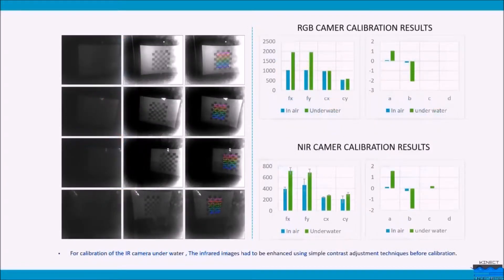The Kinect IR and RGB cameras were calibrated using a checkerboard submerged underwater. The infrared images required were of very low intensity due to the absorption of light and had to be enhanced using simple contrast adjustment techniques.